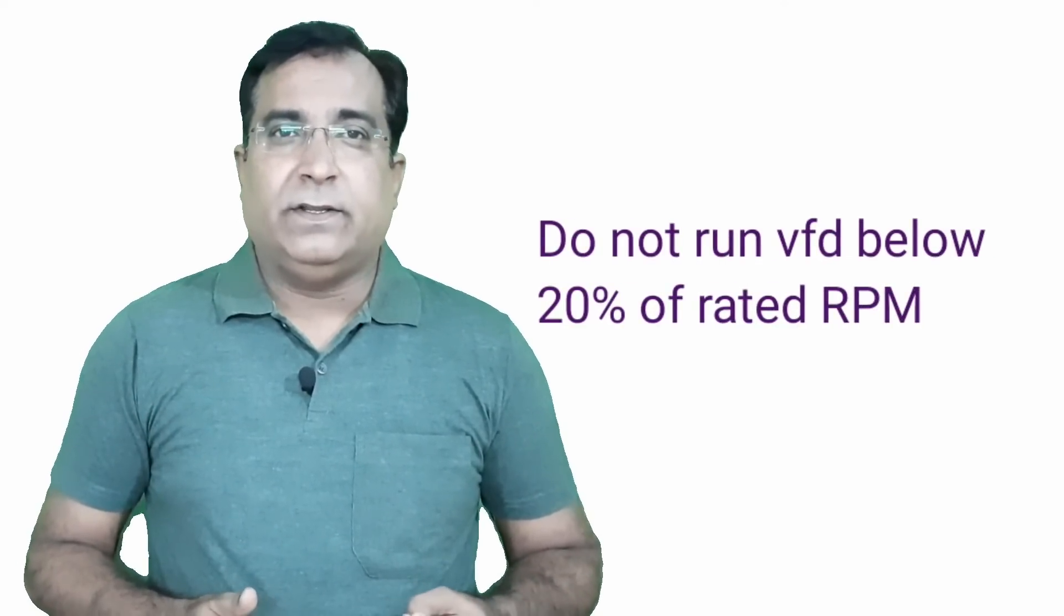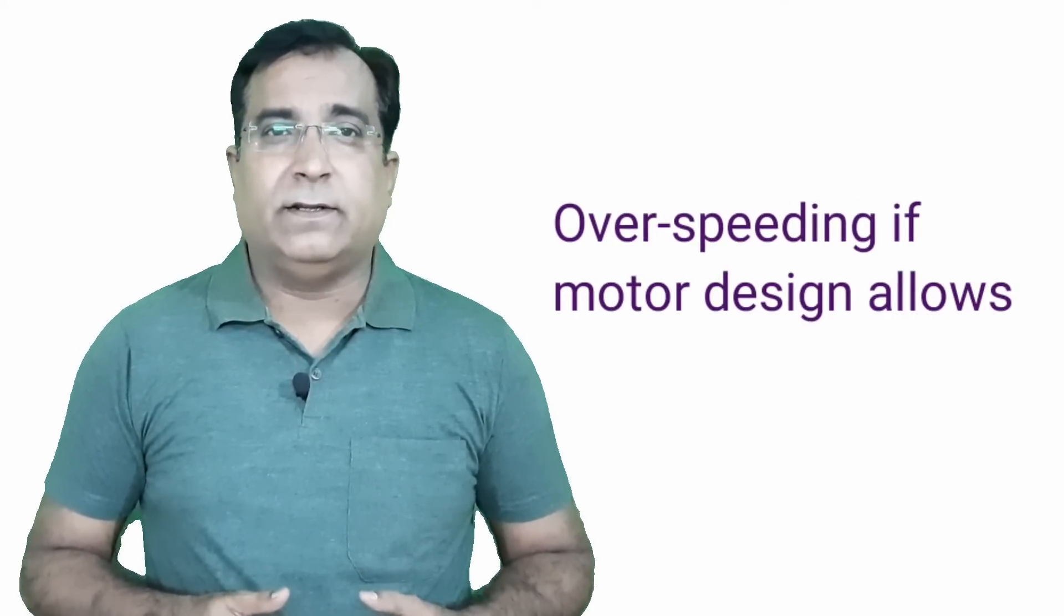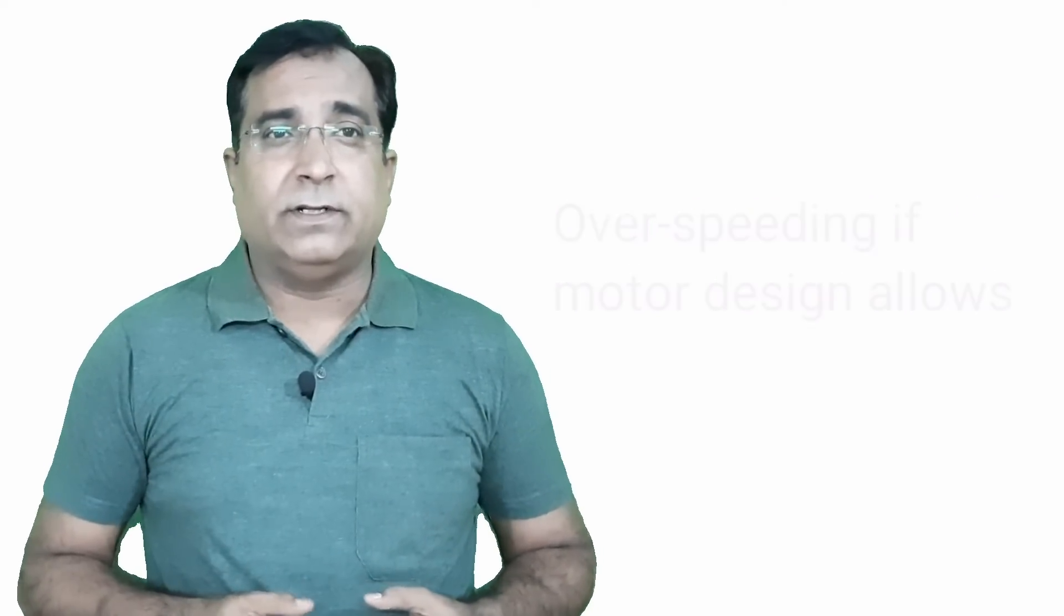Speed range. The motor should never run below 20% of rated speed. There will be issue of motor cooling. If you have to run below 20% speed, then you will have to arrange for auxiliary motor cooling system. The same is true when you are going to run motor at speed higher than rated. Confirm if motor design allows it.